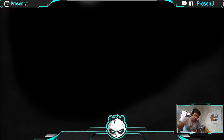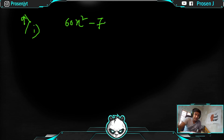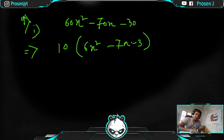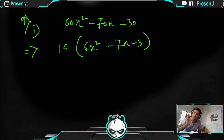For 60x² - 70x - 30, you can first take out the common factor of 10. I won't complete this sum in full — the point is that once you take out 10, the remaining trinomial is the same type we just solved, and you apply the same middle terms method to get the final answer.